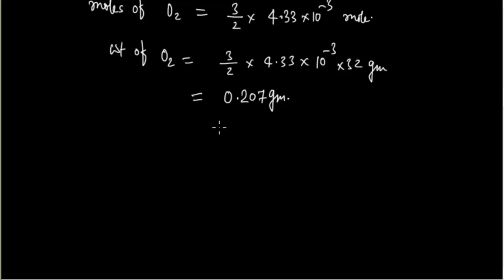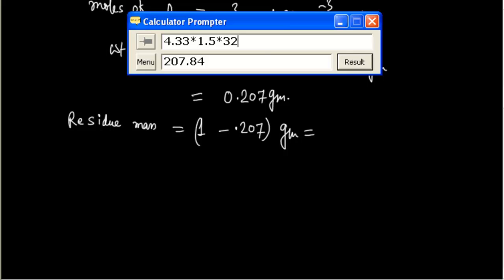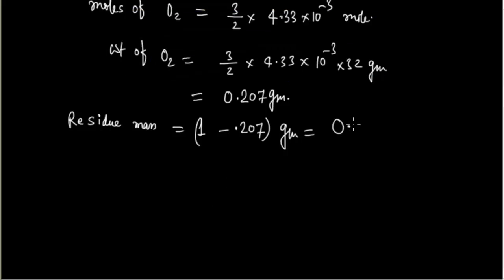Applying mass conservation: residue mass = total mass − mass of oxygen evolved = 1 − 0.207 = 0.793 g.